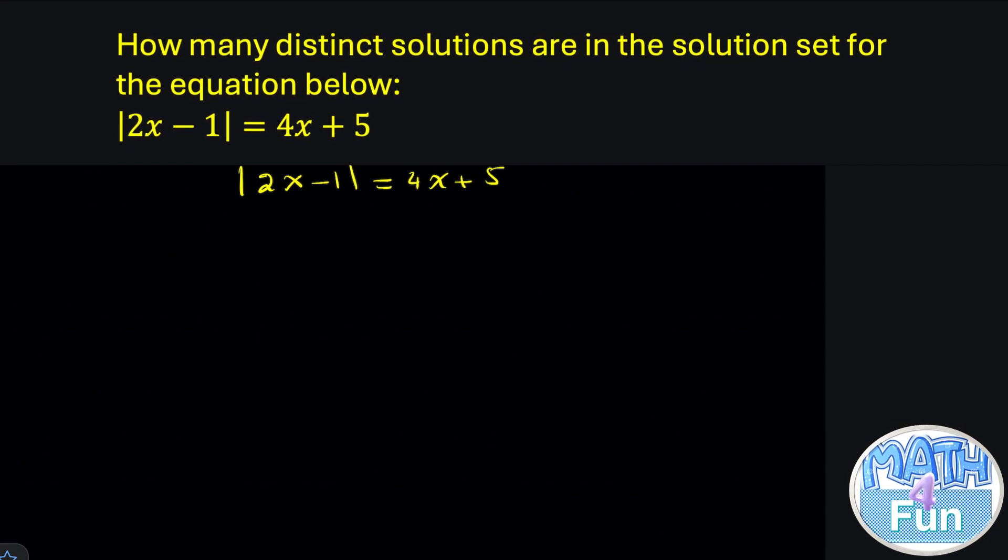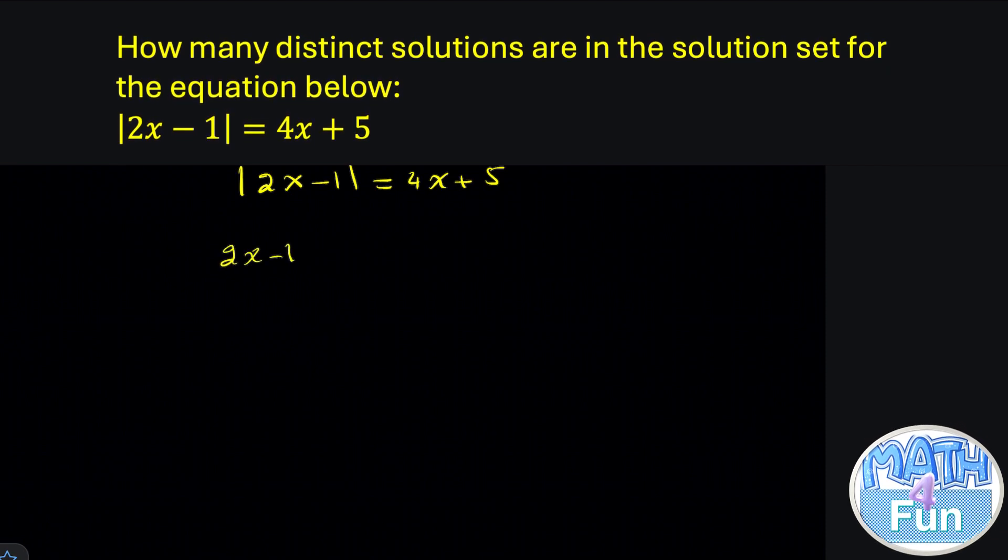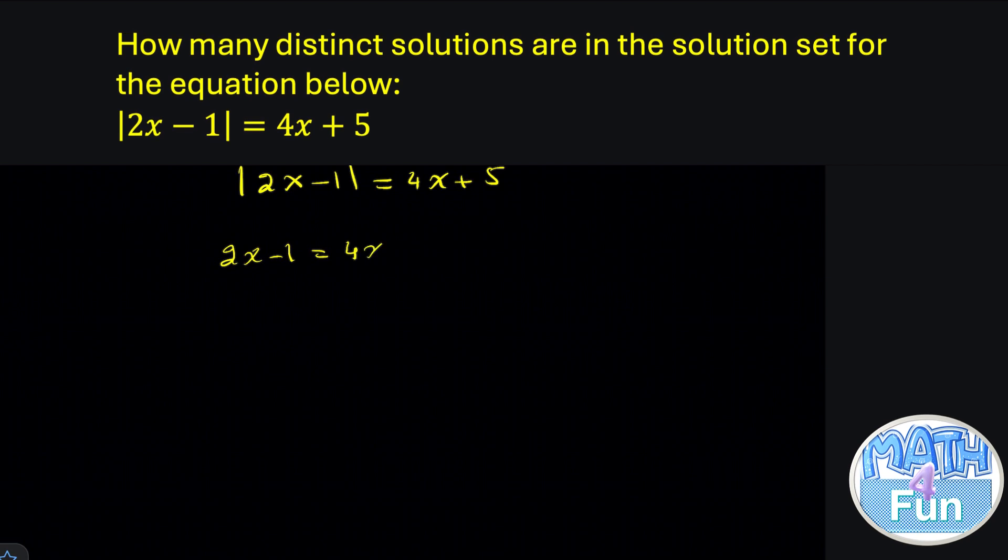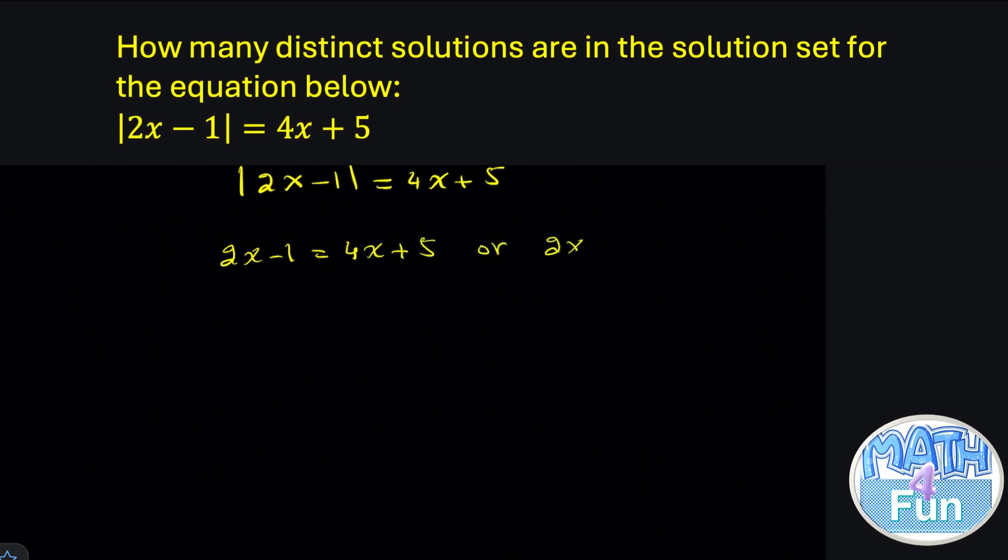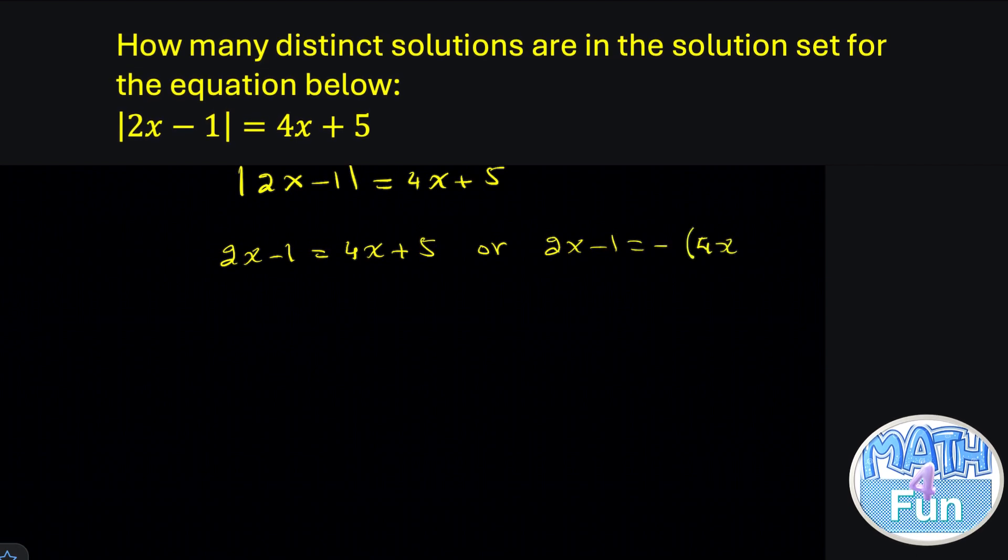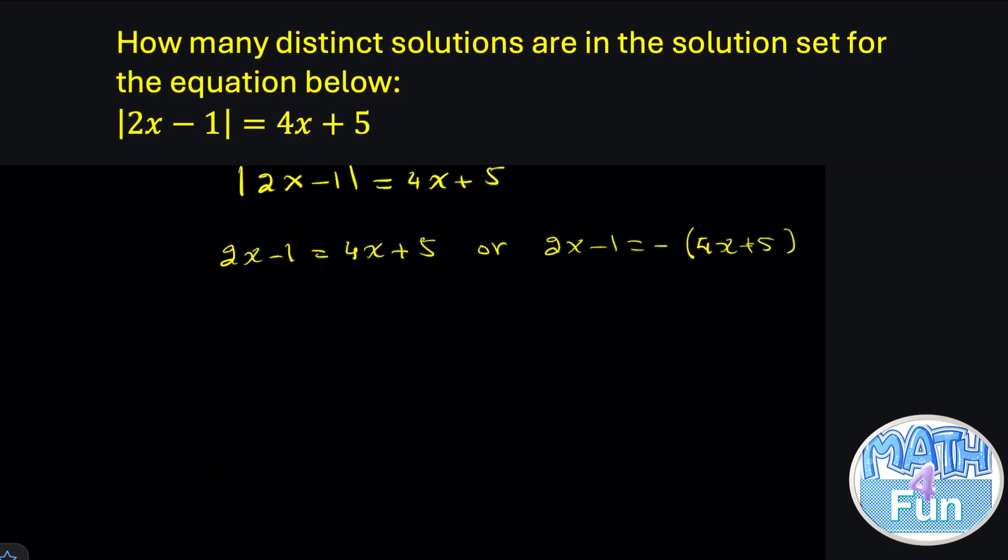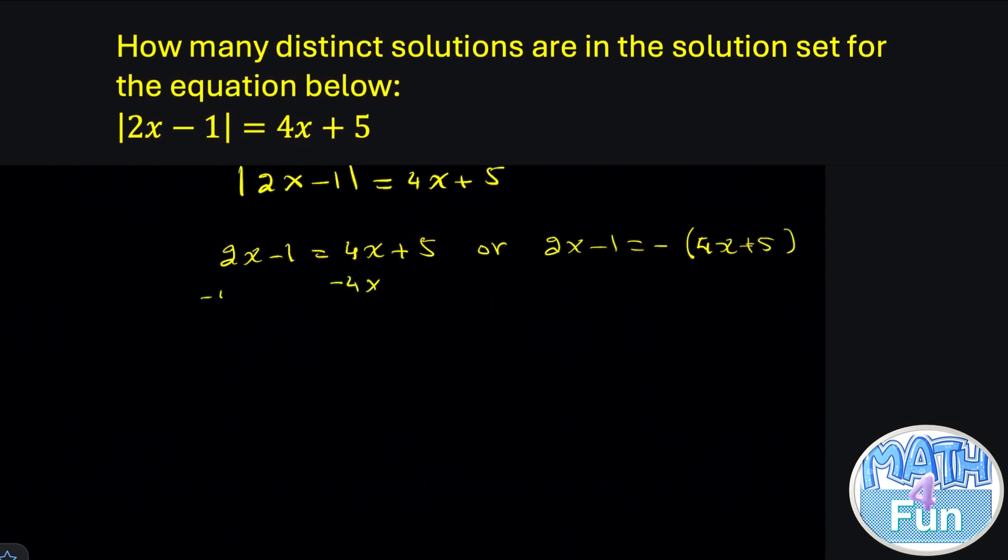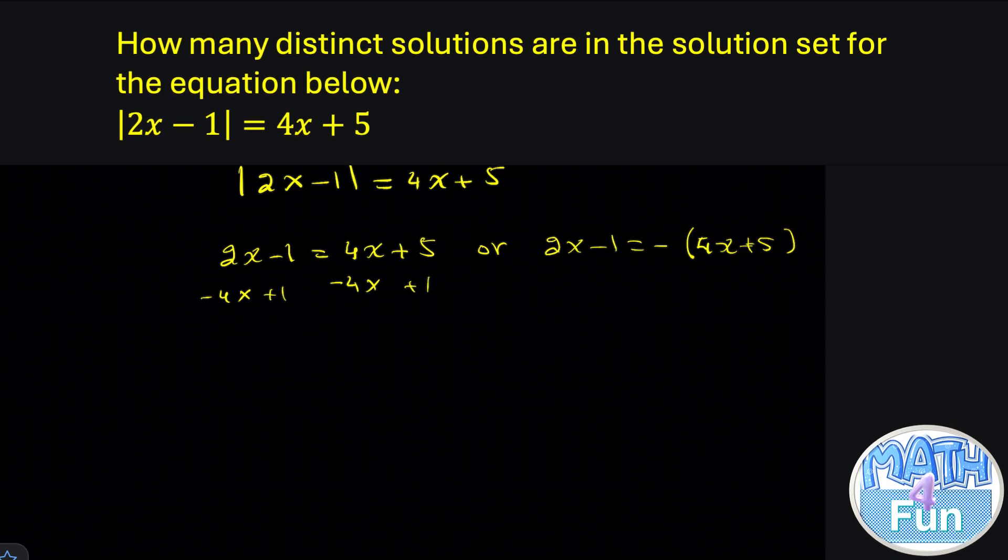Let's solve it manually. To solve this equation you know that when we have absolute value. So we write 2x minus 1 is equal. The first time we have it 4x plus 5. Or we write 2x minus 1 is equal to the opposite of 4x plus 5. Now we solve this minus 4x minus 4x. Here plus 1 plus 1.